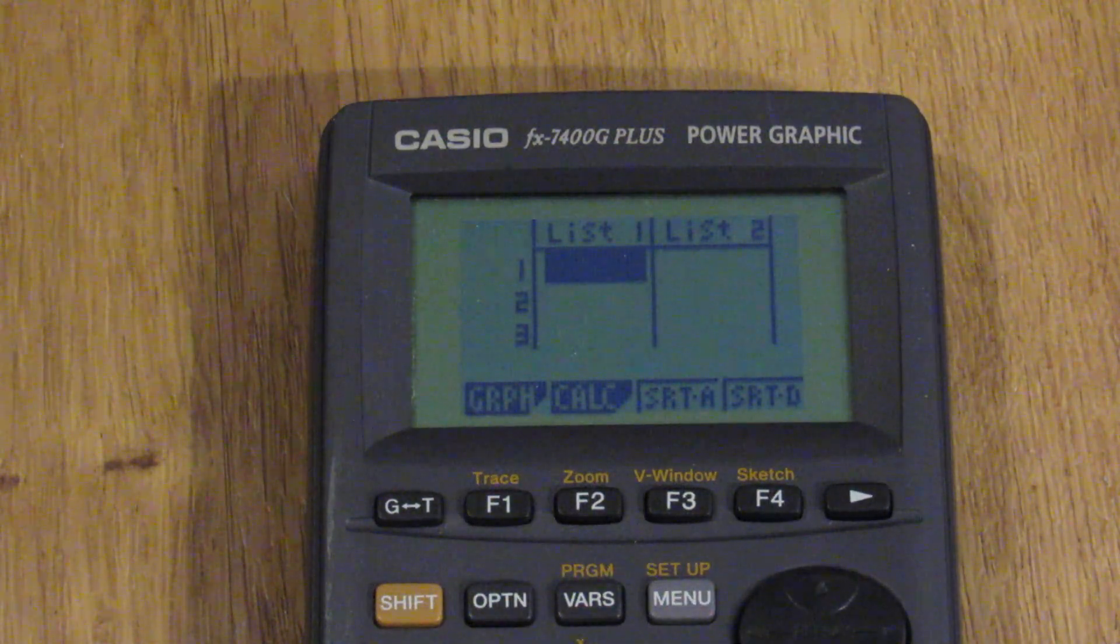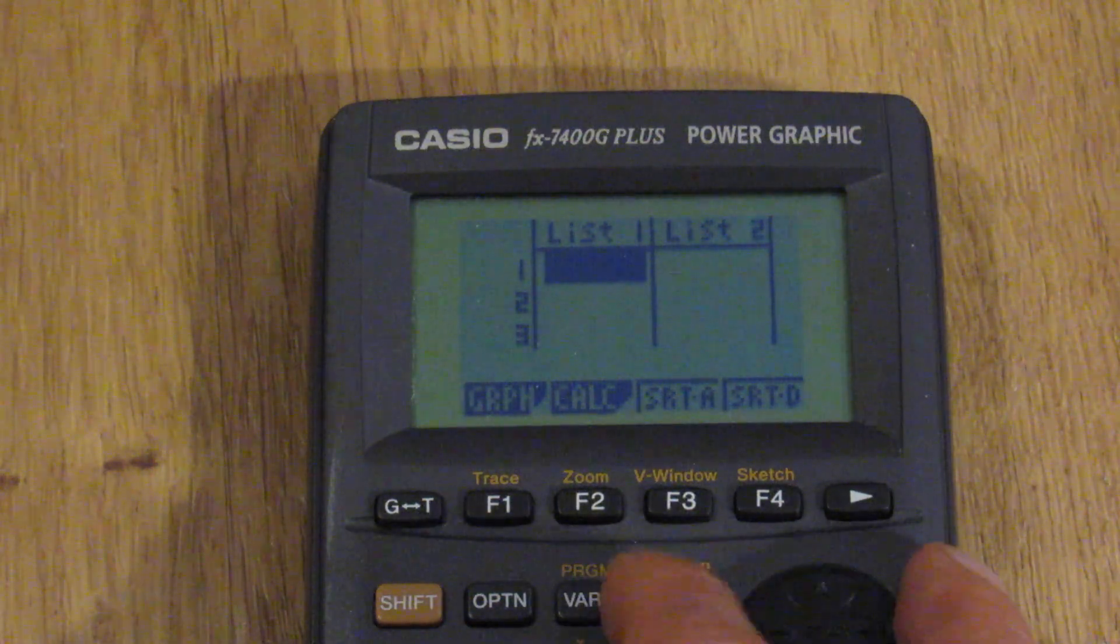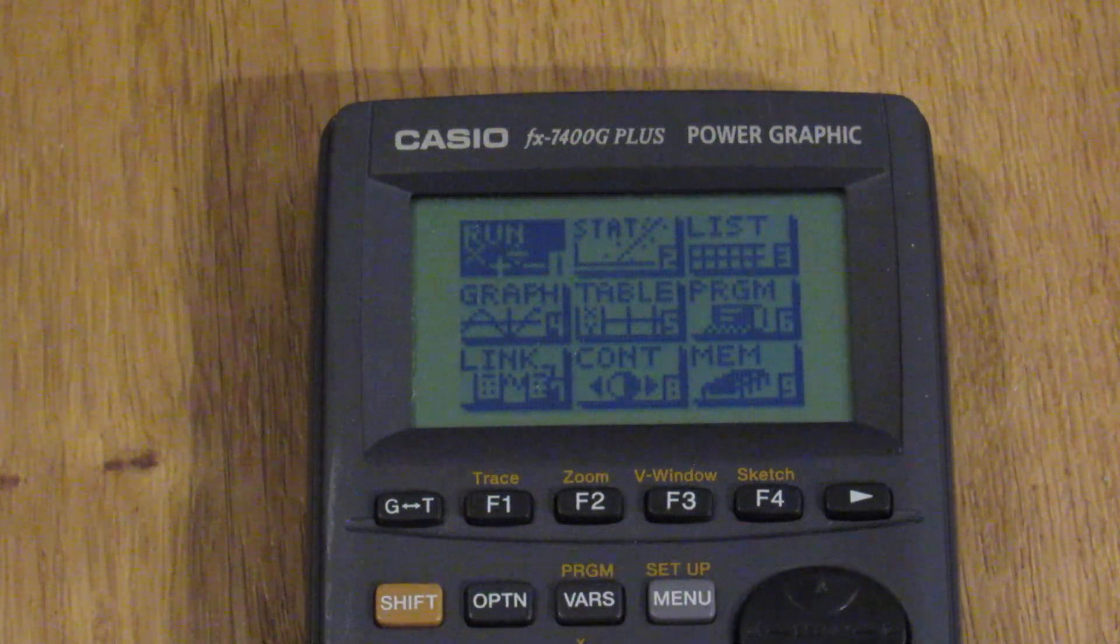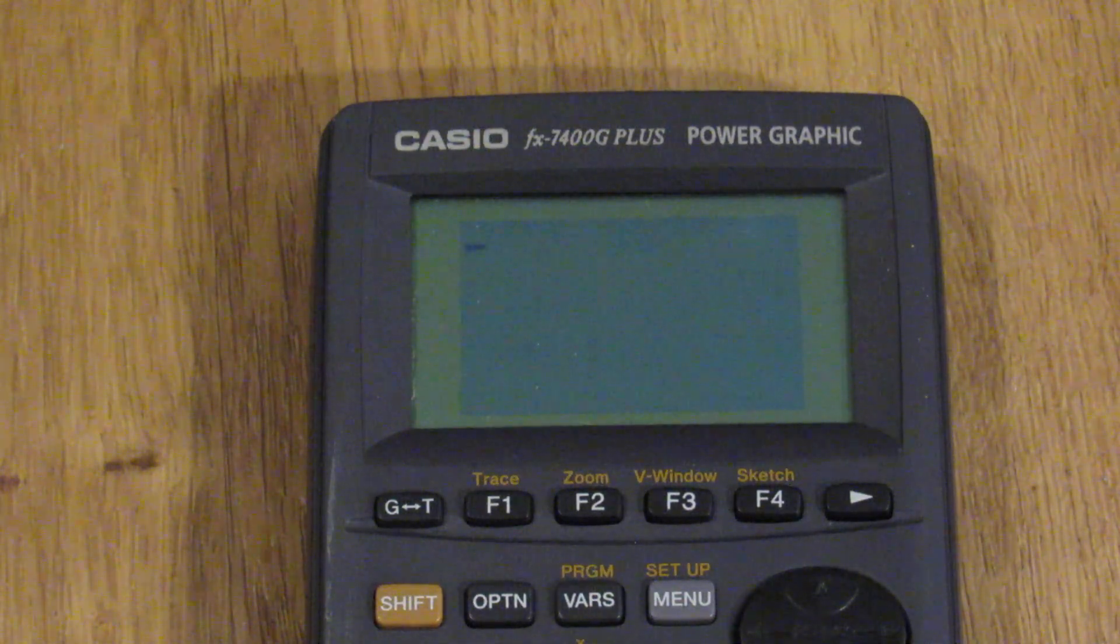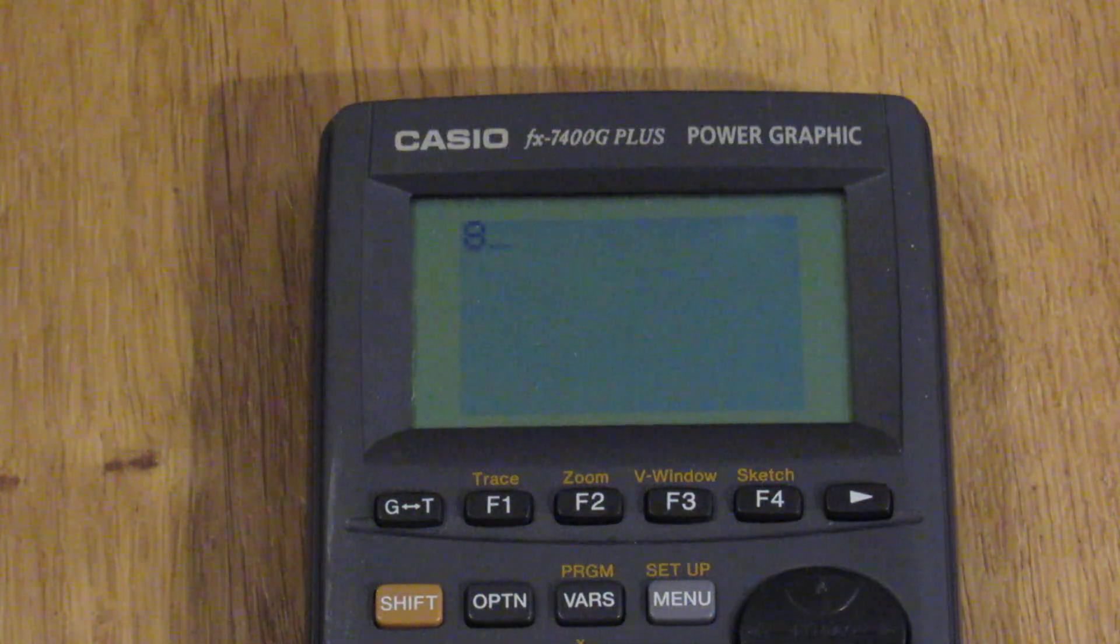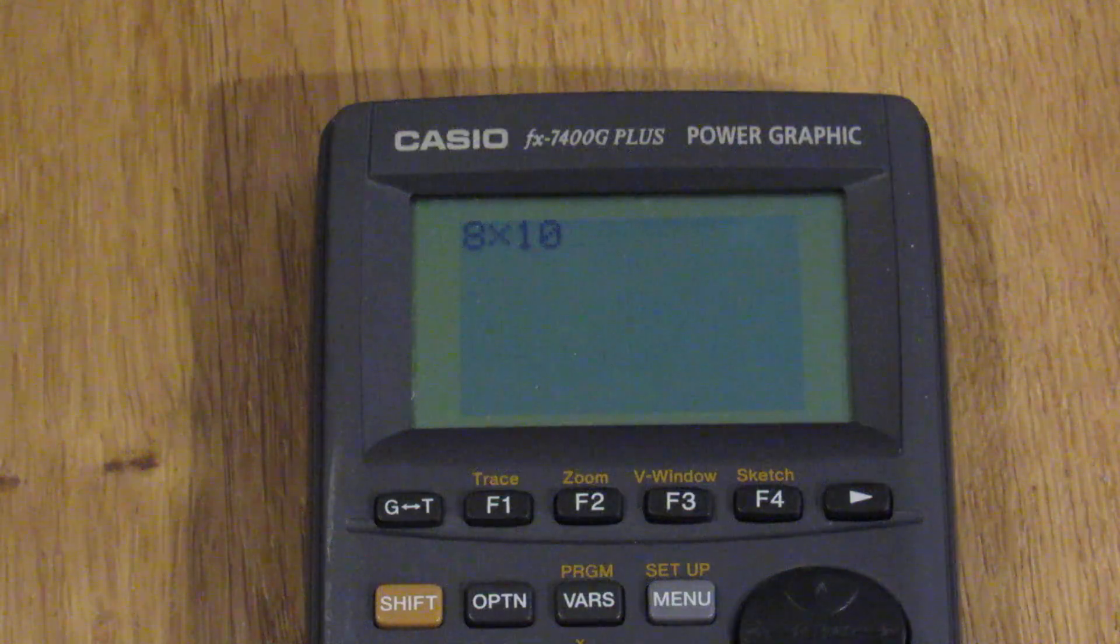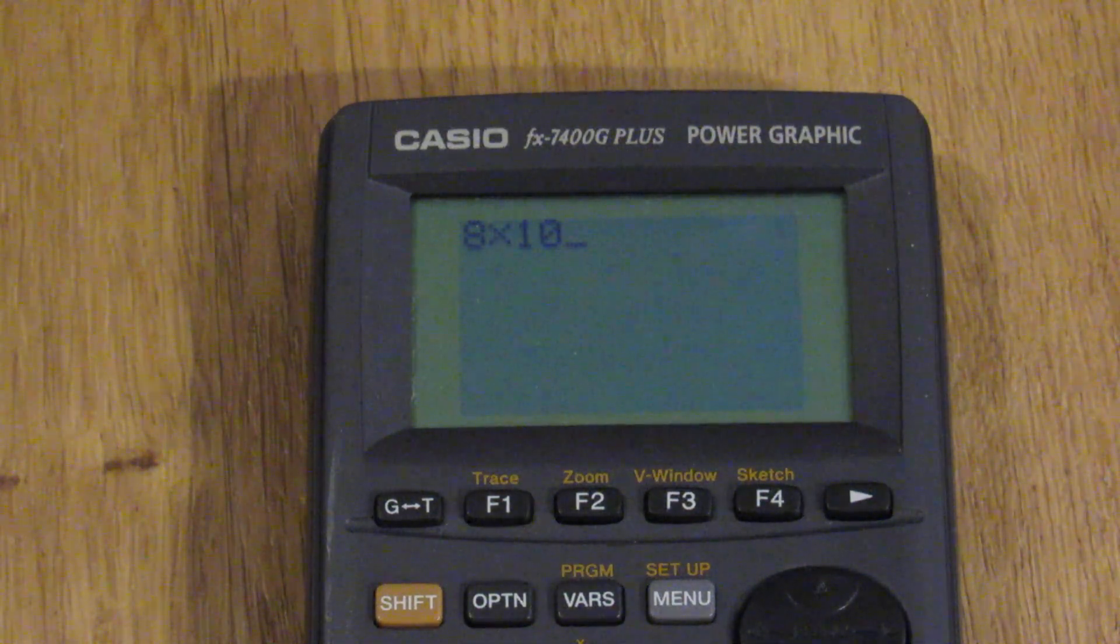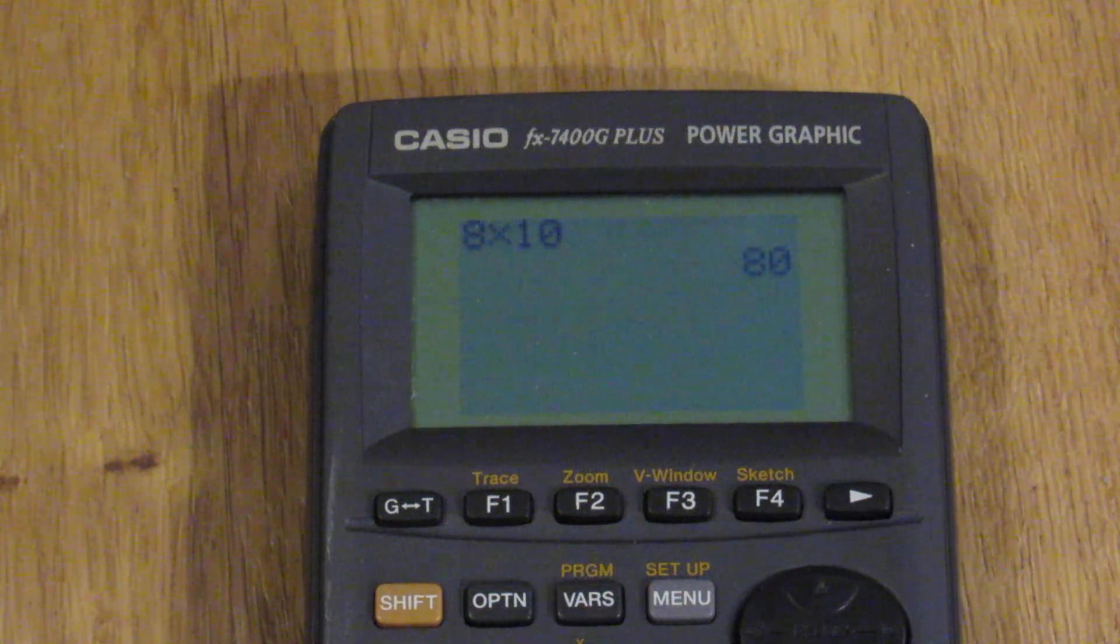Statistics. Again, that has a list and you can manually enter and then run. You can do your regular scientific calculations. Just use this like a non-programmable calculator. Yeah, the zero key is a little bit sticky. So I might have to use some contact cleaner or something there.